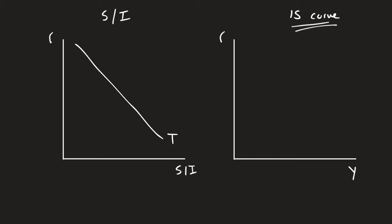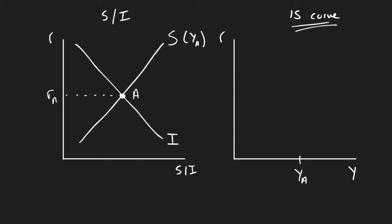Investment is not dependent on overall output, and we know that's downward sloping. Let's say we have an initial level of savings associated with a level of income, y_a. This savings function results from that income level, and we're going to get an equilibrium point — let's call this r_a. So here's a level of savings and investment equilibrium for y_a and r_a.